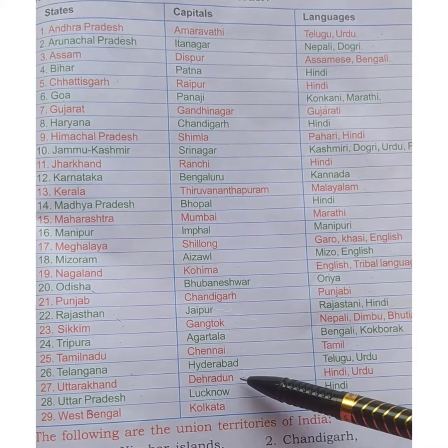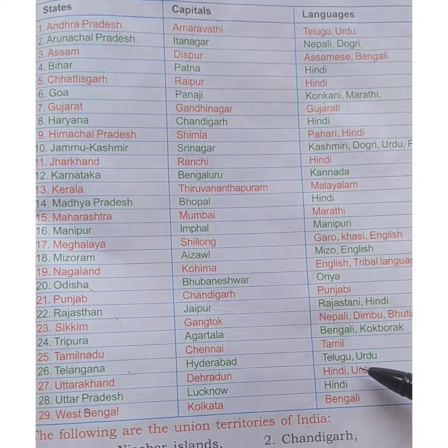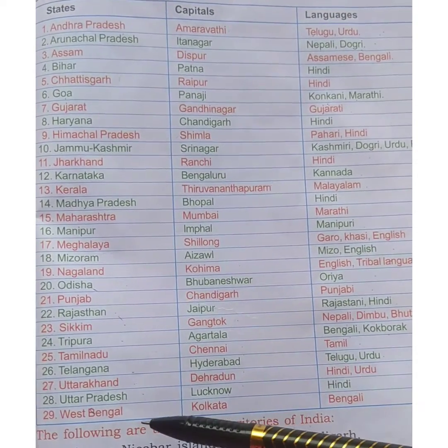Next is Uttarakhand. The capital is Dehradun. They speak Hindi and Urdu.